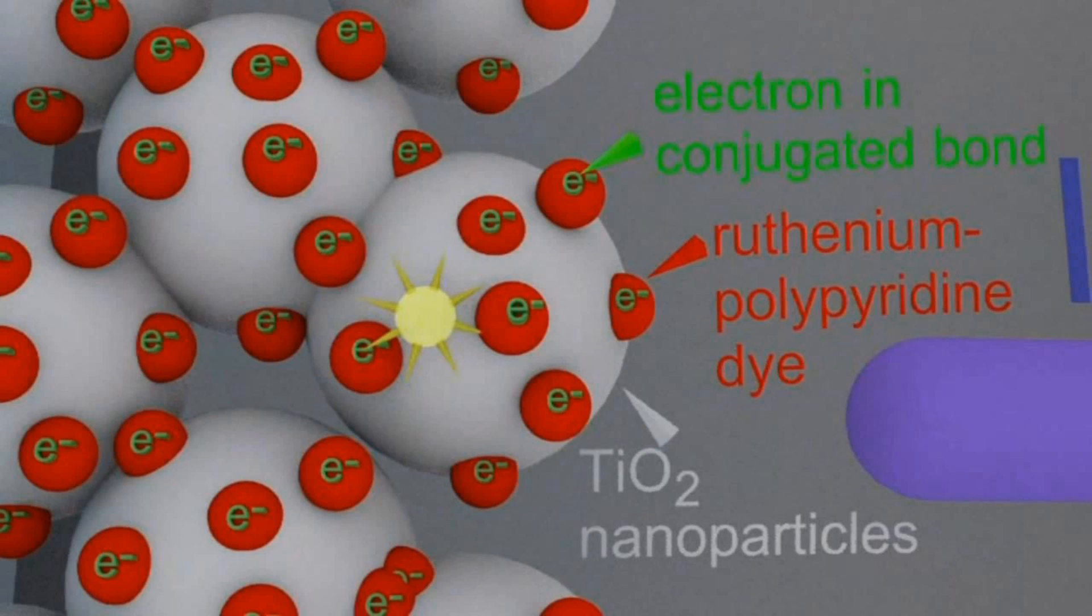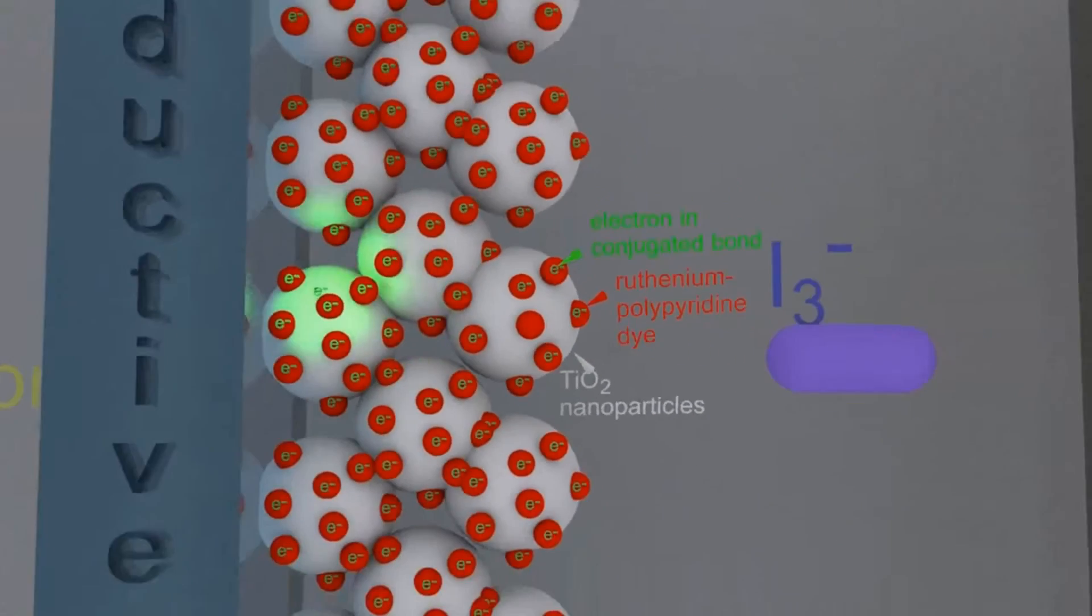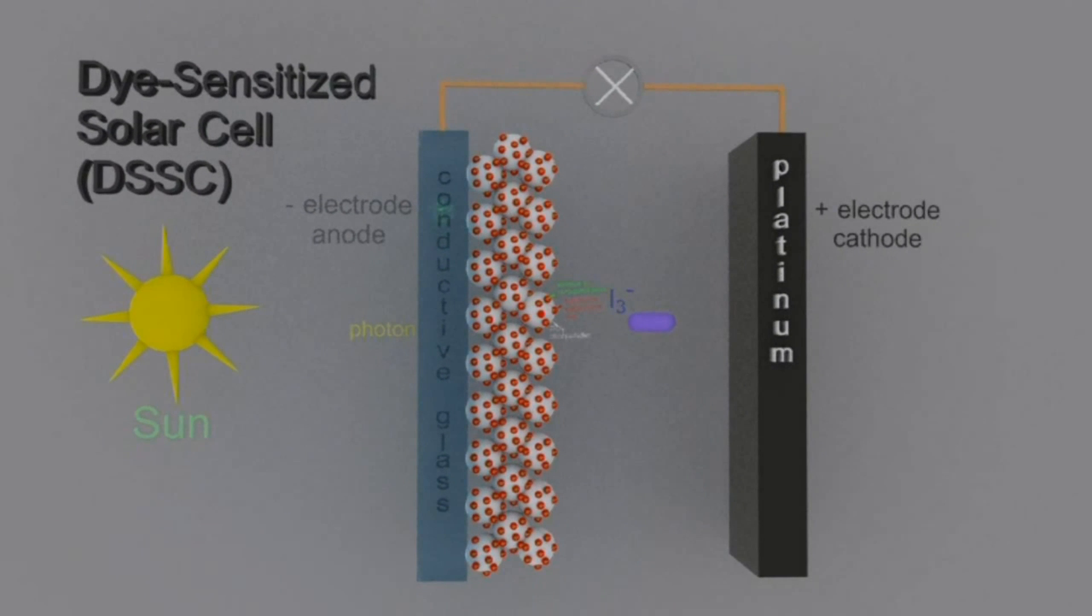A bit more detail on that later. When that sunlight hits the dye, it pops off that electron which travels through the titanium(IV) oxide into the conductive glass negative electrode. The negative electrode is giving off electrons and that's why it's negative.